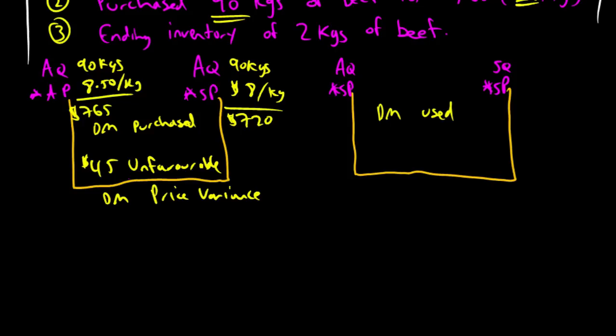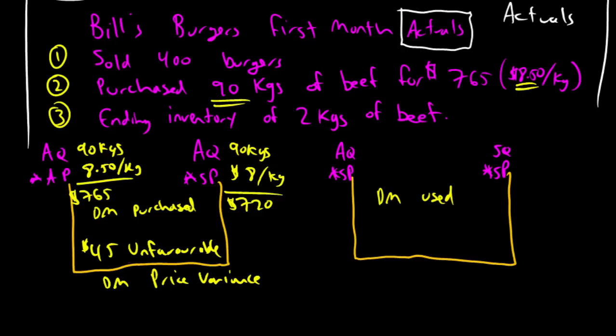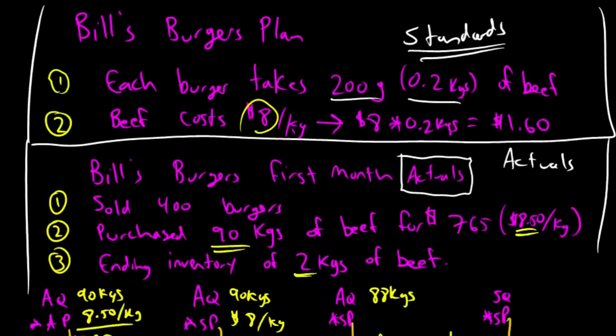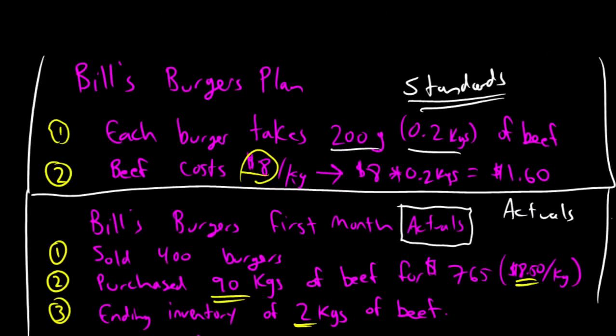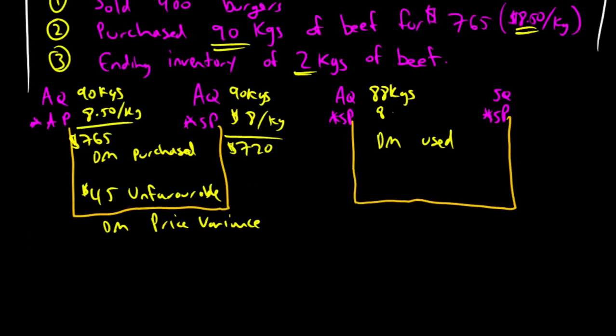Moving over to quantity, the direct materials used. We want to figure out the actual quantity of material that he used. He purchased 90 kilograms. He had 2 kilograms left over. So, we can say, he purchased 90, he had 2 left over, however, he must have used 88 kilograms. His standard price here, well, that didn't change. His standard price was and is $8 a kilogram. So, he used 88 kilograms. The cost here was $8 a kilogram. 88 times 8 is 704.